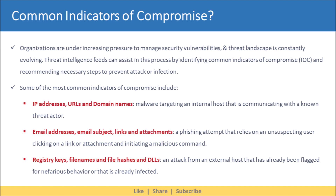Next, it includes email addresses, email subject, links, and attachments. An example would be a phishing attempt that relies on an unsuspecting user clicking on a link or attachment and initiating a malicious command. Lastly, it includes registry keys, file names, file hashes, and DLLs. An example would be an attack from an external host that has already been flagged for nefarious behavior, or that is already infected.